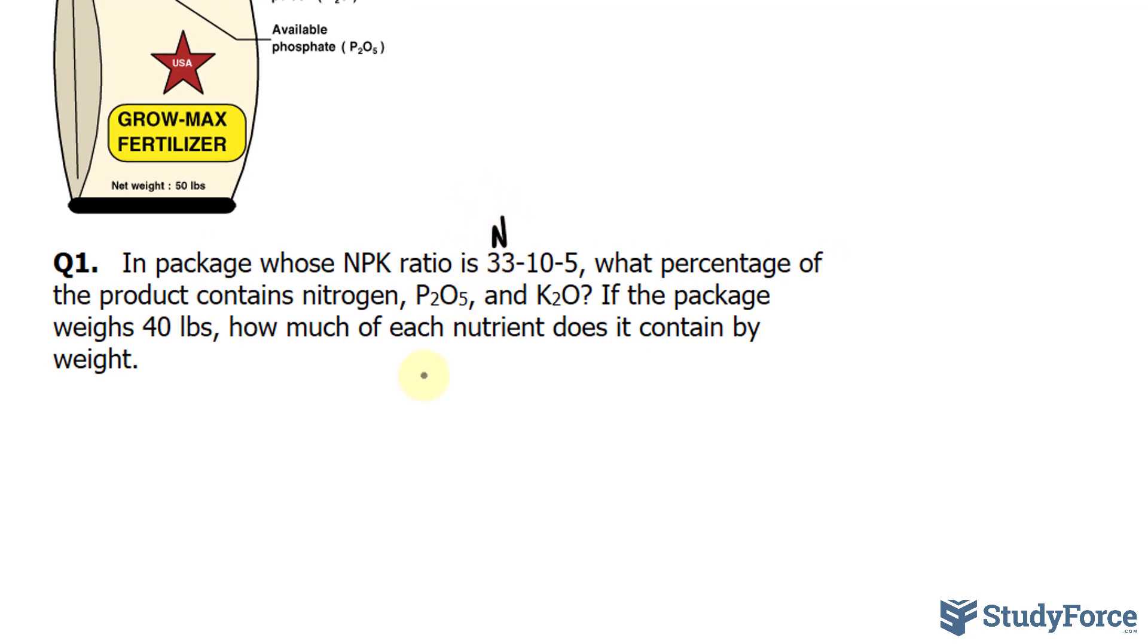The first number represents N, so this means that 33% of the package is elemental nitrogen. The second number represents P2O5. So I'll write down P for short, and that means 10% of the total weight of the fertilizer is P2O5. And this last number, the K, is 5% K2O. So that answers the first part of the question.